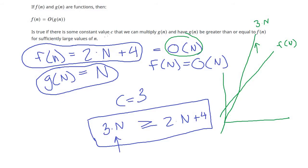This satisfies the definition. Essentially, it means we can ignore the coefficient — we can multiply by a constant to recover being above the original 2n — and we can ignore the constant term +4 because as n gets bigger and bigger, the 4 doesn't make any real difference. It's the 2n term that matters. That's how this definition works for the singly linked list example.